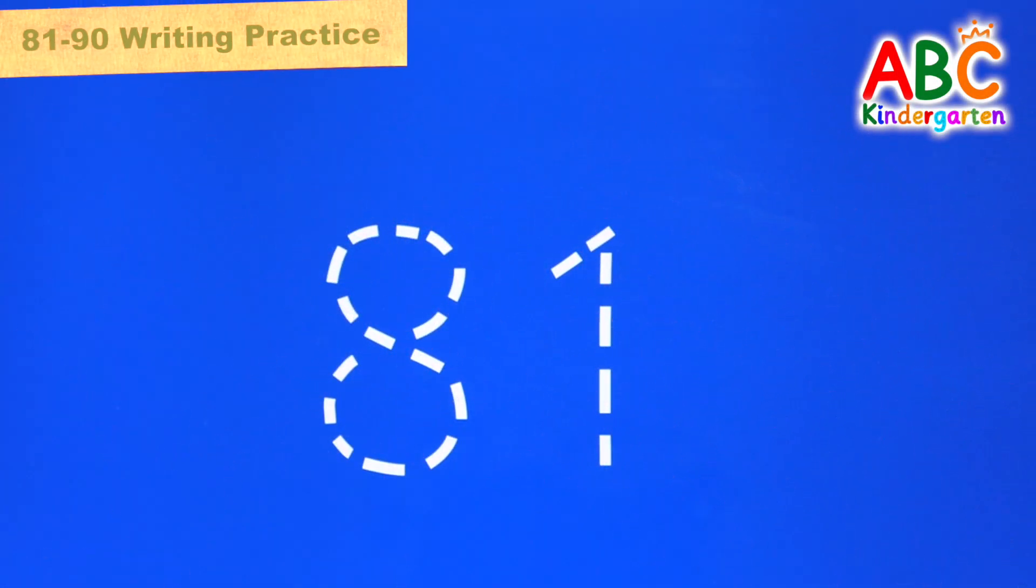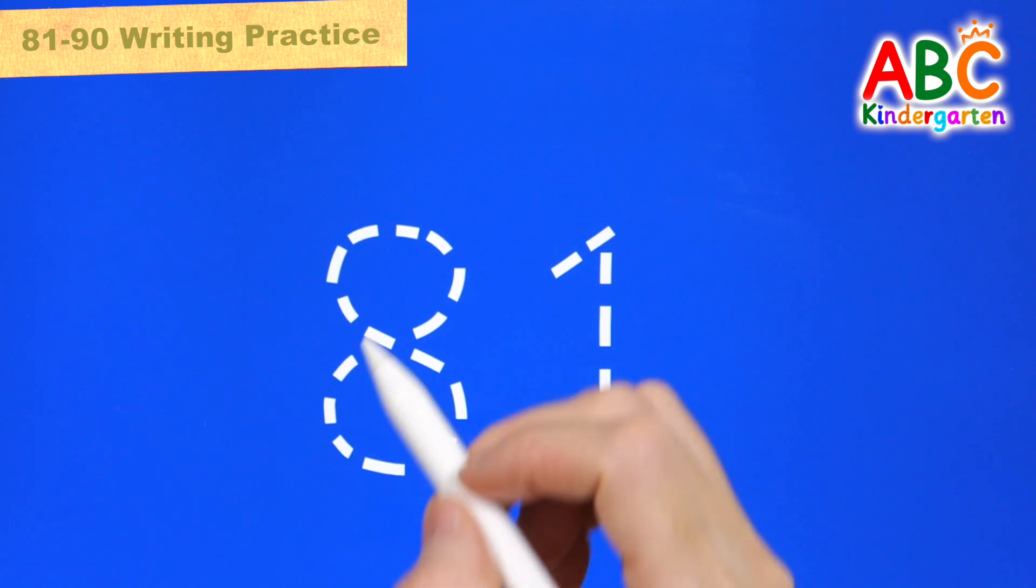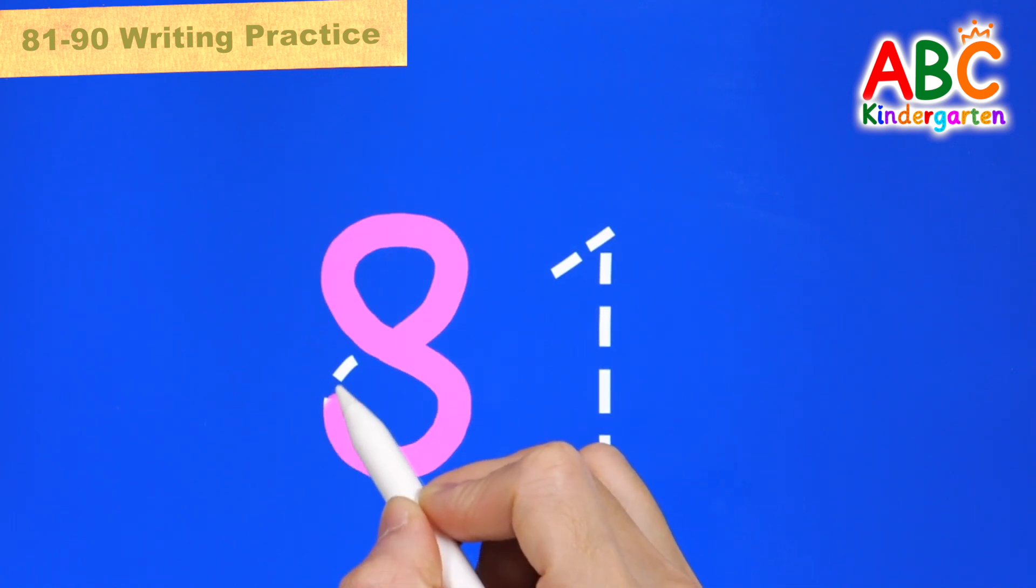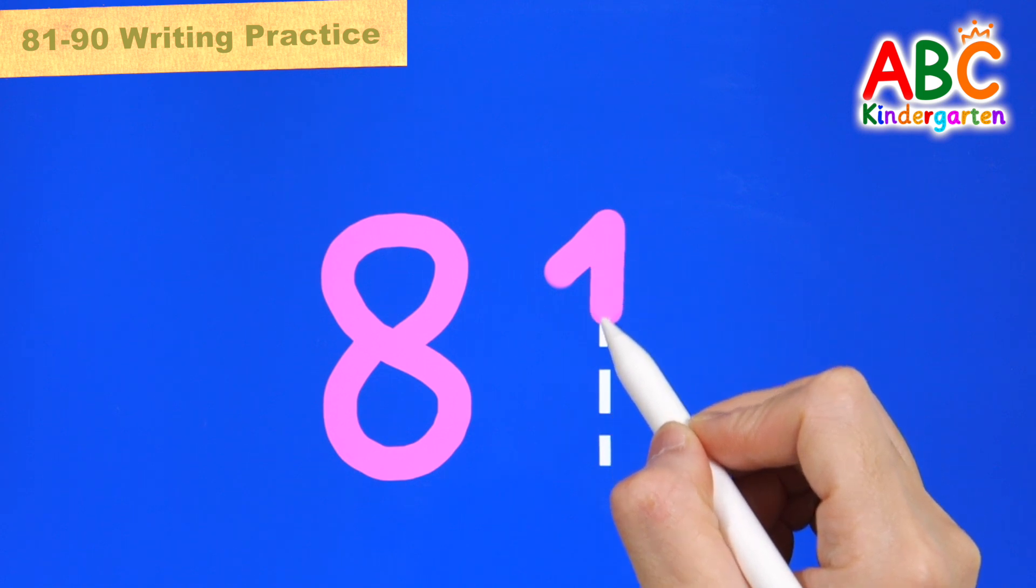Let's write numbers and read them on various colored backgrounds. Write 81 in pink on blue. 81.